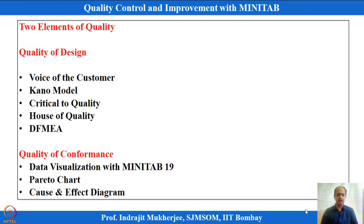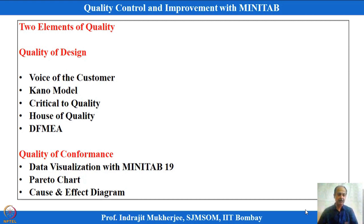Then we will talk about failure mode and effect analysis in design, which can also be implemented in process. This is one important aspect we will discuss with examples. Then we will move to the main part of the course — quality of conformance. Quality of conformance means whenever the design is frozen and comes to production, we have to ensure that the key design parameters are within the specified limits defined by the designer, ensuring the quality of what comes out of the process and is delivered to the end user.